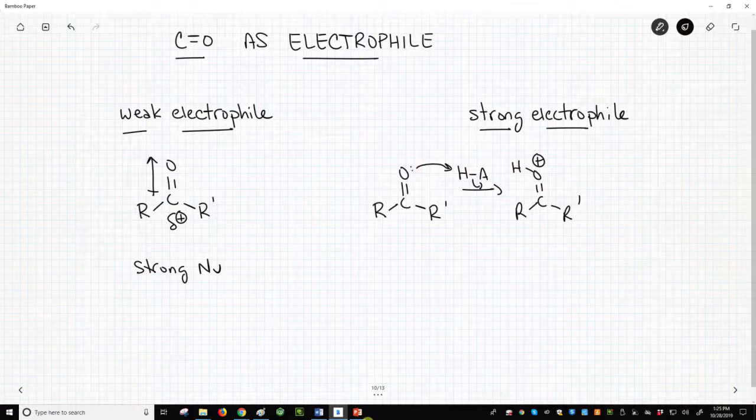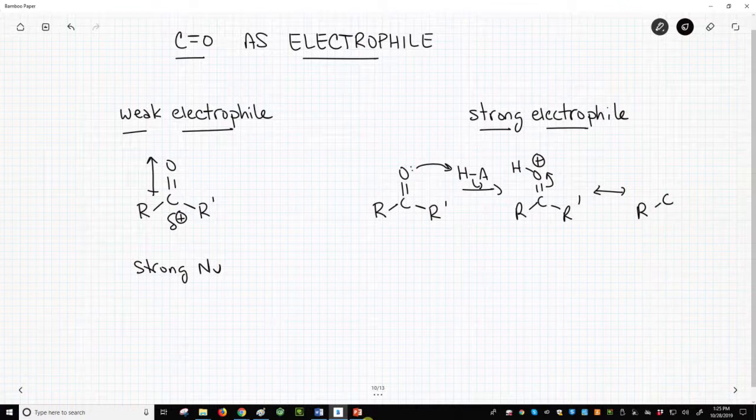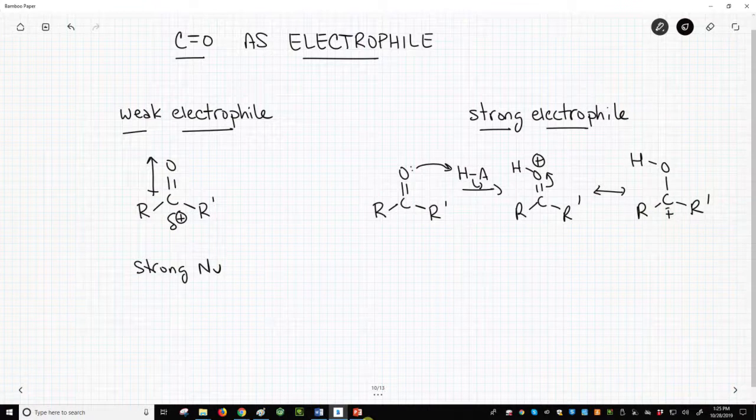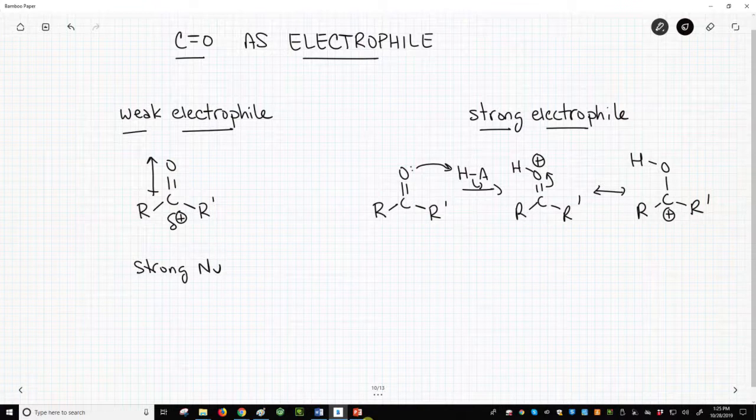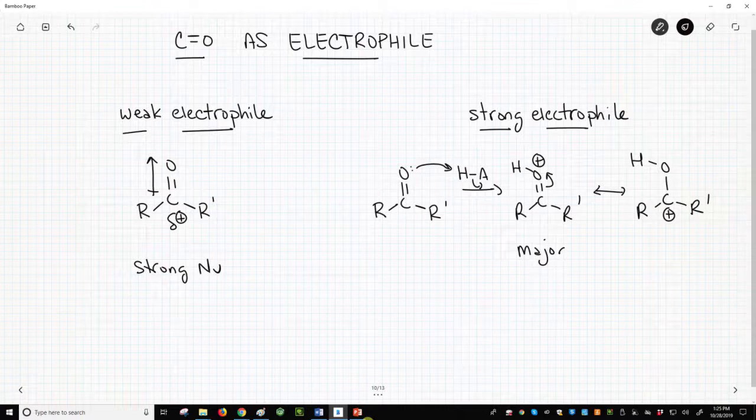We can draw another resonance form by breaking the CO-pi bond, and that gives us a carbocation instead. The O-plus resonance form is the major contributor because it satisfies the octet rule, but the carbocation is still a minor contributor and does explain the strong electrophilicity of a protonated carbonyl.